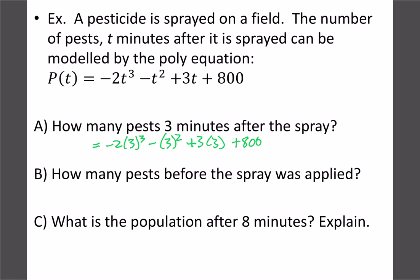Plugging in t equals 3: negative 2 times 3 cubed minus 3 squared plus 3 times 3 plus 800 gives us 746 pests. For Part B, before the spray is applied is t equals 0 — wherever there's a t it equals zero — so we're looking at our y-intercept, which is 800. So we started with 800 pests, and after three minutes we were down to 746.